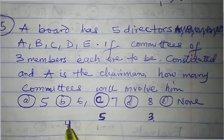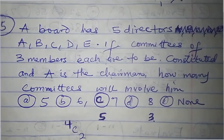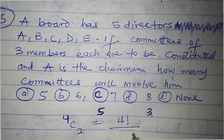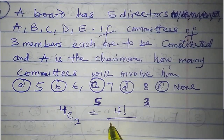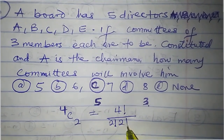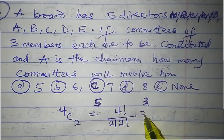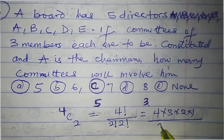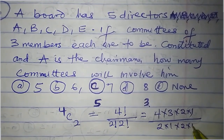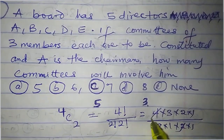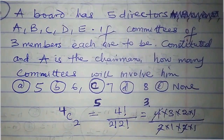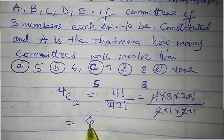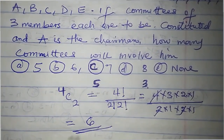The number of committees that will involve A is the number of ways of choosing two persons from the remaining four, which is four combination two. Four combination two is four factorial divided by (four minus two) factorial times two factorial. Four factorial is four times three times two times one; two factorial is two, and two times two is four. Three times two is six, so the correct answer is six, that's option B.